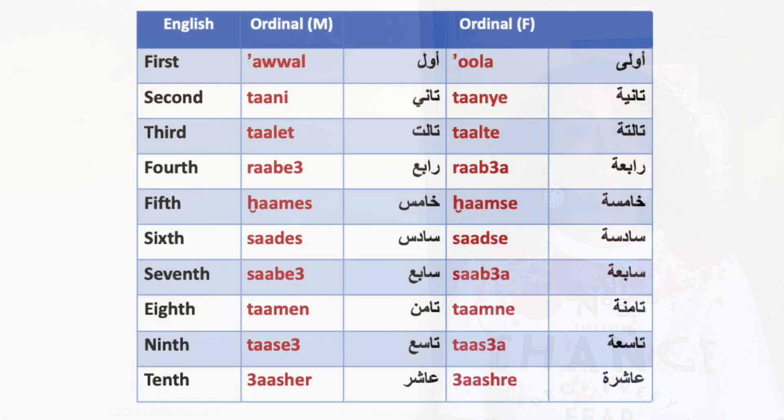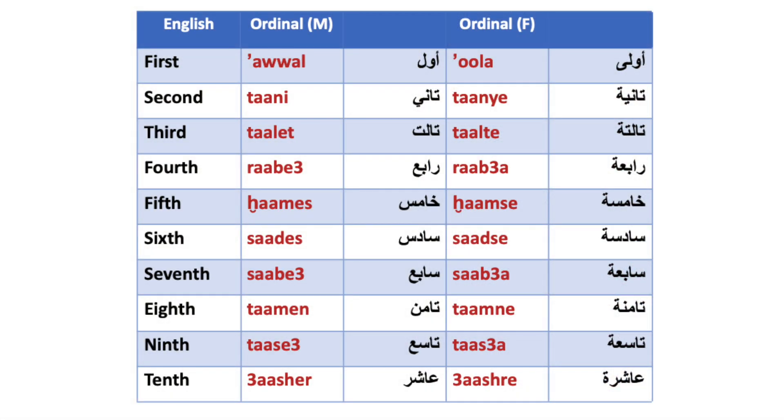Ordinal numbers in Arabic are gender-defined. Therefore, you need to be familiar with both the masculine and the feminine ordinal forms. Let's learn the ordinal numbers through this table, and then we'll have a few examples on how to use them.